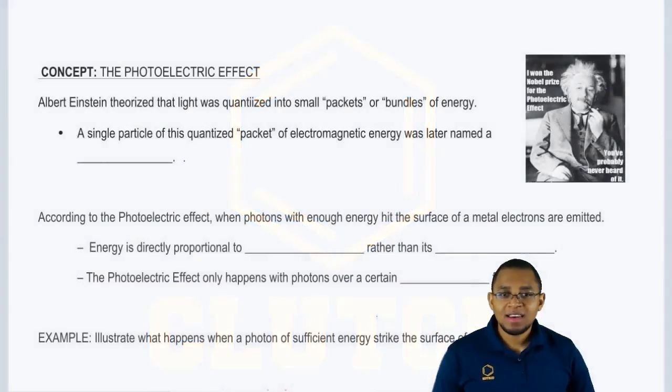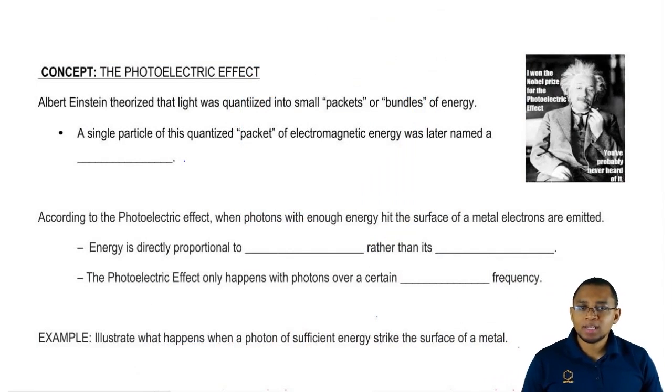We're going to take a look at what's called the photoelectric effect. We all know who Albert Einstein is. We know his theory of relativity, E equals mc squared, but we need to realize that he never won a Nobel Prize for that theory. What he won it for was the photoelectric effect.